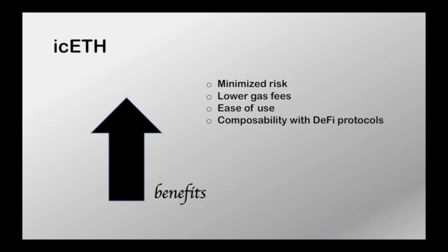Now let's move on to the benefits of icETH. Index Coop states that it minimizes risk: the high correlation between the collateral and the debt — staked ETH and ETH — significantly lowers liquidation risk. Rather than submitting a dozen different transactions in Aave and other protocols, users can simply buy icETH tokens and benefit from socialized gas costs, meaning lower gas fees. icETH also rebalances the position for users so they don't need to constantly monitor or manage it.